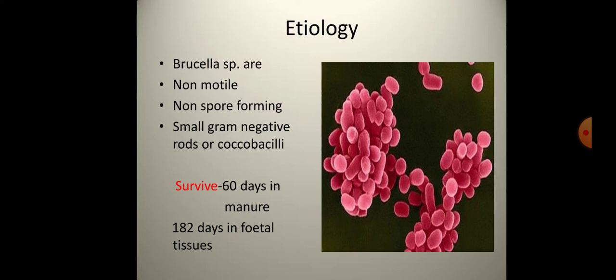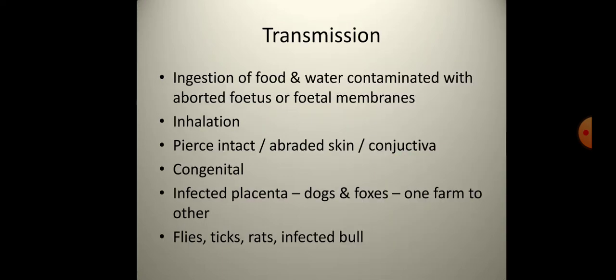The organisms are gram-negative rod-shaped, as seen in the picture. Transmission occurs through ingestion of food and water contaminated with aborted fetus or fetal membranes, inhalation, and through intact or abraded skin, conjunctiva, congenital infection, infected placenta, dogs, foxes passing infection from one farm to another, and also through ticks, rats, and infected bulls.